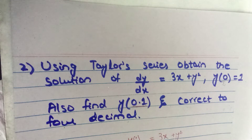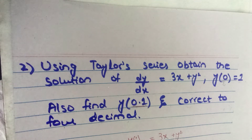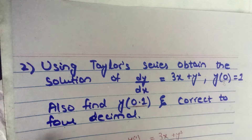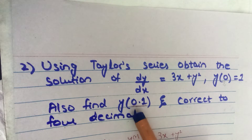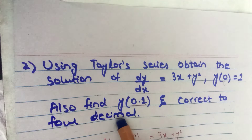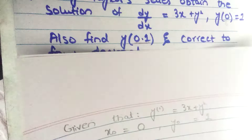Dear students, assalamu alaikum. I welcome you to another lecture on Taylor's series. In the previous video we discussed that the next question we are going to take will be a kind of question that comes in your paper, with proper conditions. We have to find y at x equals 0.1, correct to four decimal places. Let's start solving this question.